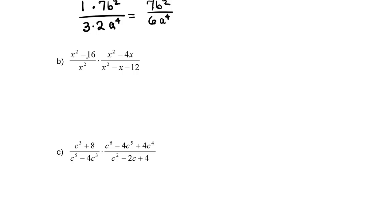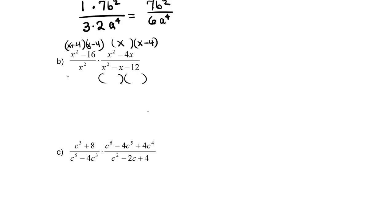Let's take a look at (x²-16)/x² times (x²-4x)/(x²-x-12). I'm going to factor these because if we don't factor them it's not going to be obvious what we can cancel. So we have a difference of squares here, so I'll have an (x+4) and an (x-4). I have x²-4x — if I factor out an x I'll be left with an (x-4). x²-x-12 gives me factors with negative 4 and positive 3.